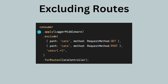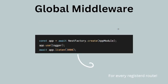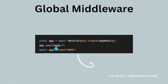For global middleware, the creation is the same — only the registration differs. You use app.use() in your main.ts file to apply the middleware globally. If you are coming from an Express.js background, you should already be familiar with app.use(). I hope the explanation was clear — in our next video we will be doing all of this practically.